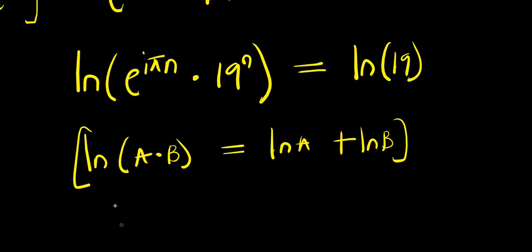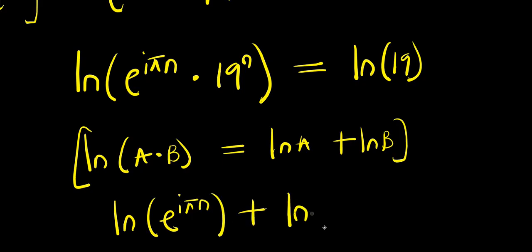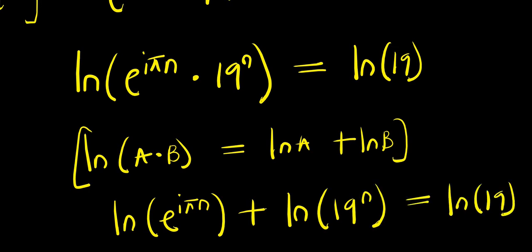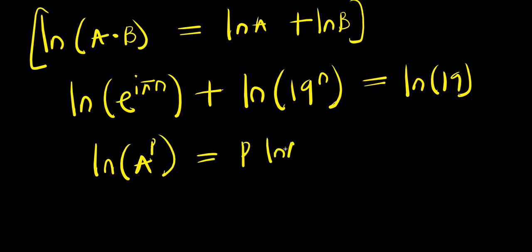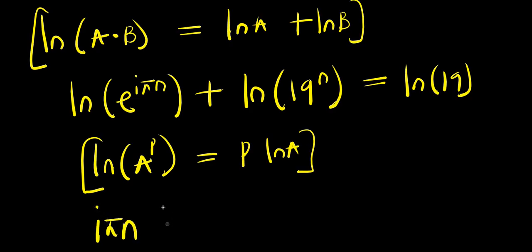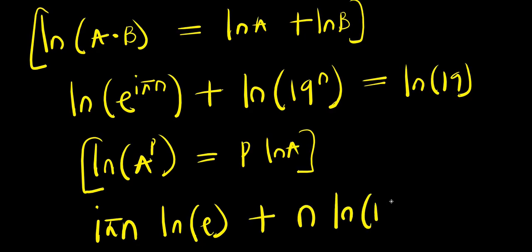So we have natural log of e^(iπn) plus natural log of 19^n equals natural log of 19. Also, if you have natural log of a to the power of b, this equals b times natural log of a. Applying this identity, we get i times pi times n times natural log of e, plus n times natural log of 19, equals natural log of 19.